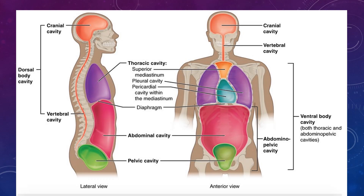In the diagram, you can see the cranial cavity, the thoracic cavity, the vertebral cavity, and regions such as the superior mediastinum, the pleural cavity, the pericardial cavity, and the diaphragm. Below that, you can see the abdominal cavity and the pelvic cavity.